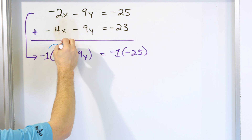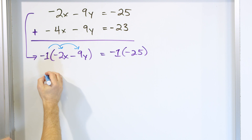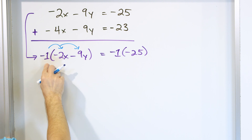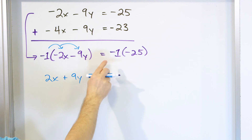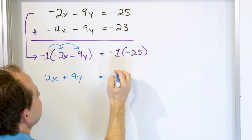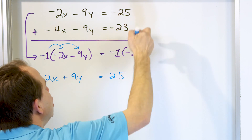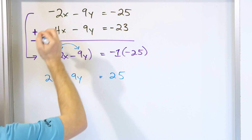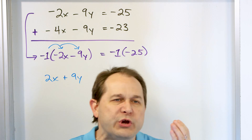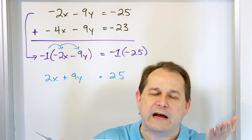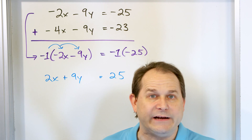Don't forget, you have to distribute — everything must be multiplied by negative 1. So this becomes positive 2x, and this times negative 1 becomes positive 9y, and the right side becomes positive 25. Now this equation looks different than the original, but it represents the same thing, because you did change all of the signs on the left-hand side and at the same time made the right side positive 25.